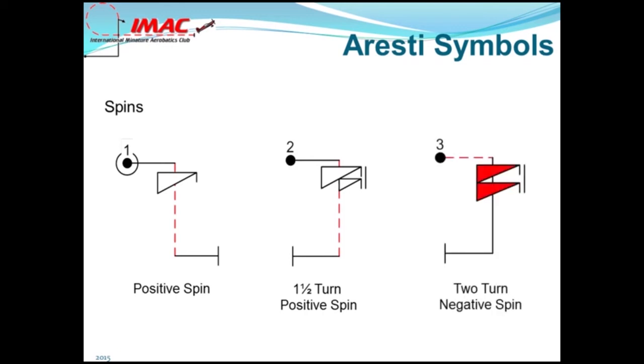Spins. Spins are shown as right triangles. These also have a little line or a flag which points to the direction of flight. Positive spins are unfilled while negative spins are filled in red or black. More than one-turn spins will always be linked and drawn with a line joining the right triangles.